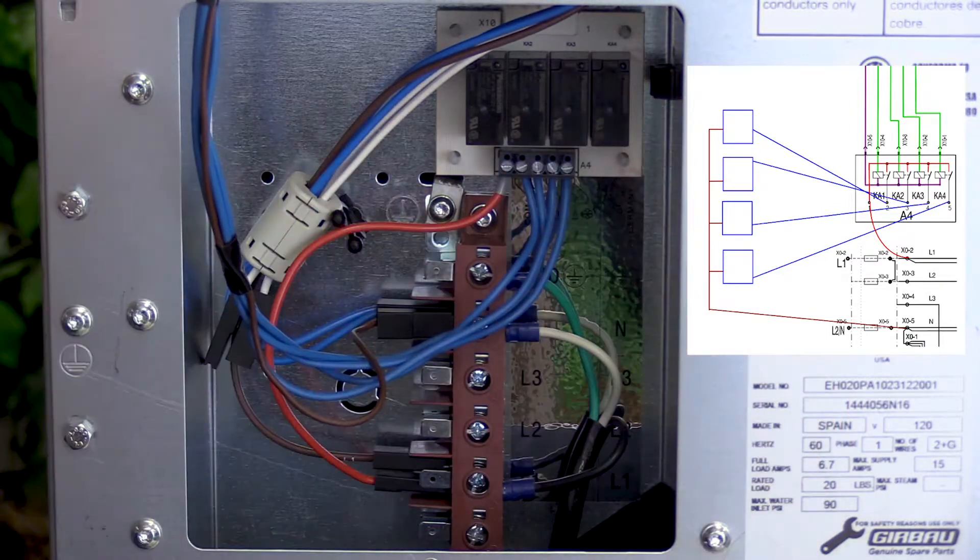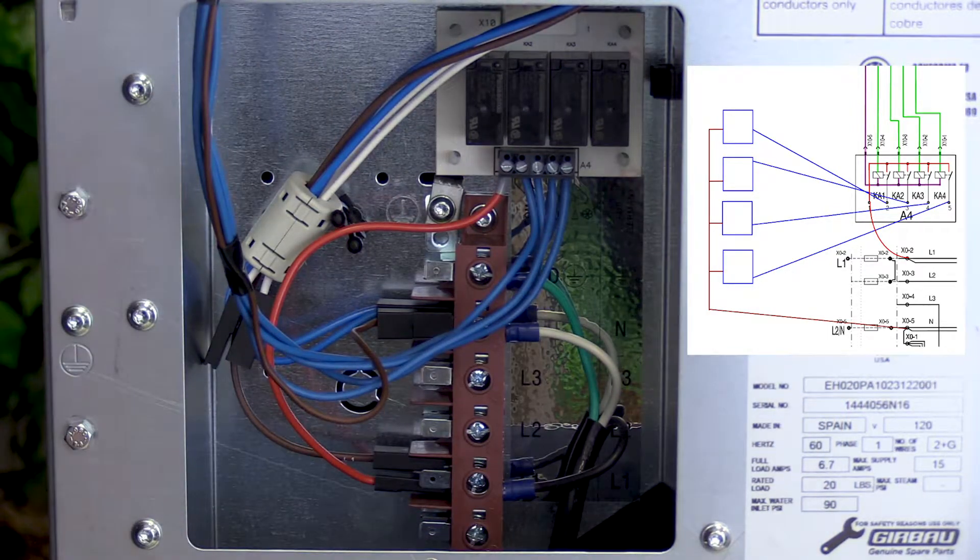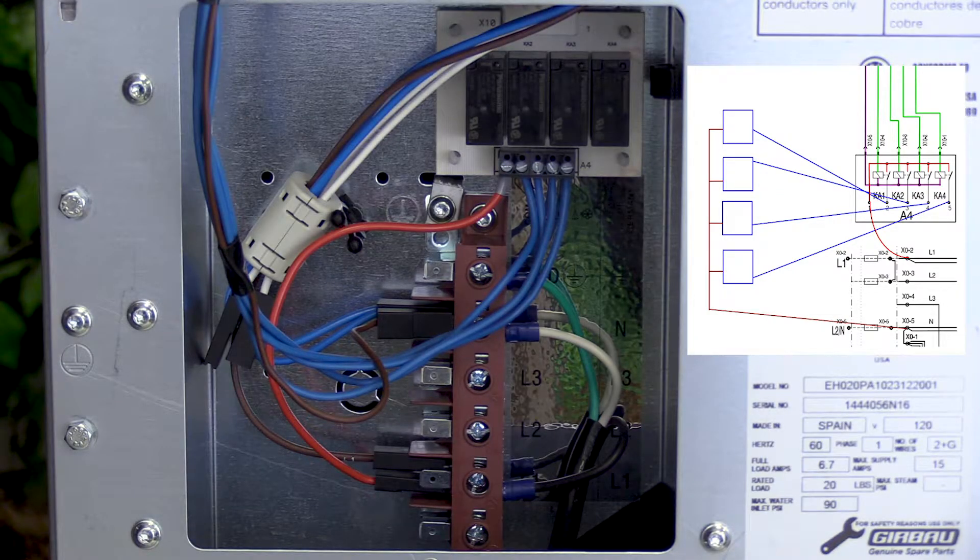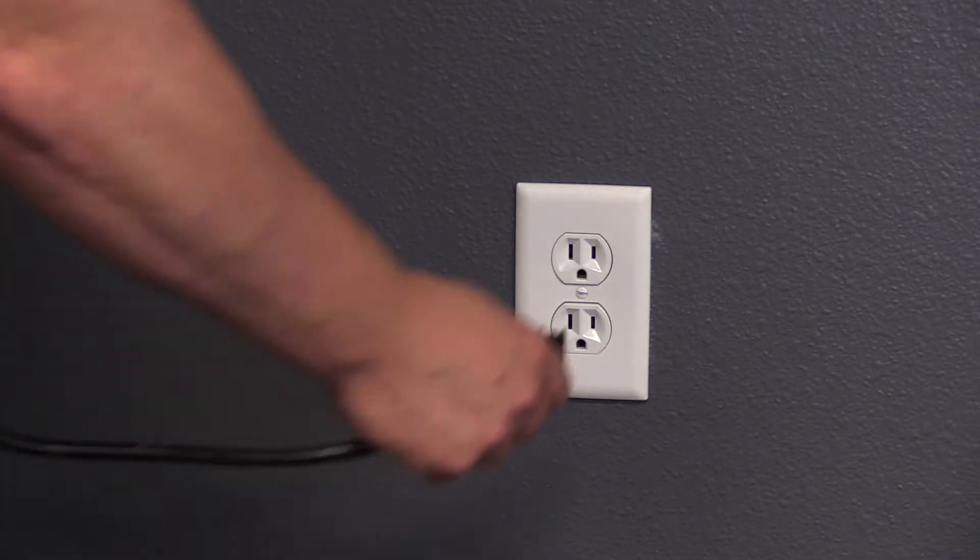Connect the common wire from your chemical dispensing system and connect it to the N-L2 terminal. Reconnect power and test system.